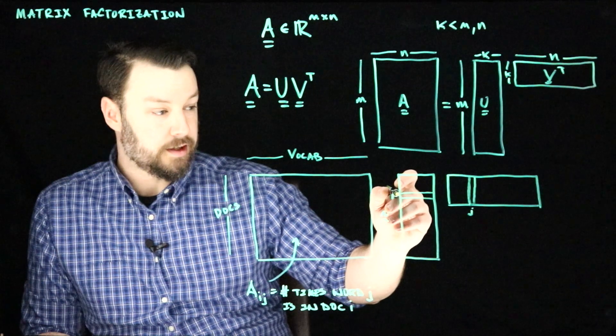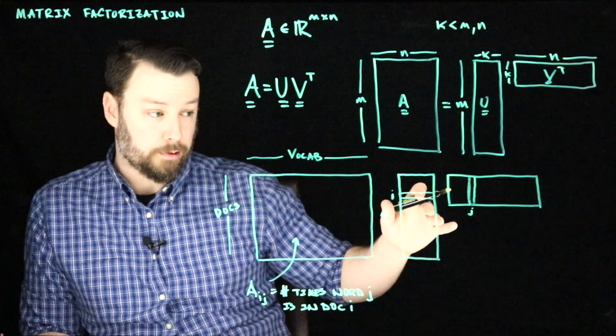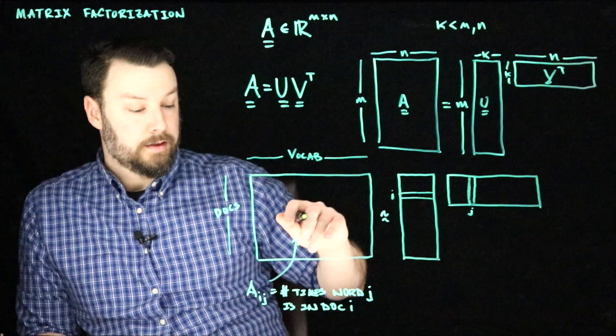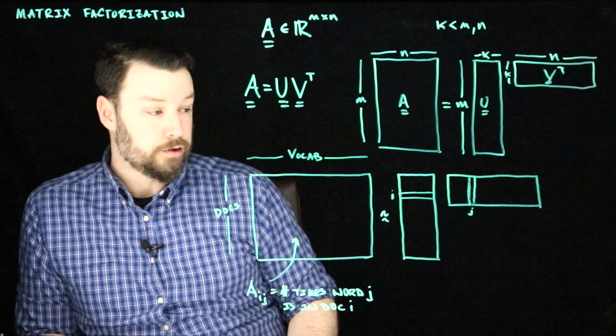If we think about this as a row vector, and this is a column vector, and we take their inner product, then this is going to be large when those values tend to align.